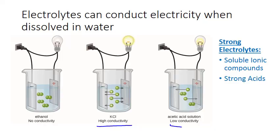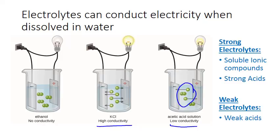The beaker on the right is an example of a weak electrolyte. It's weak because it produces fewer ions in solution. These are generally weak acids. Weak acids do dissociate to a degree, but only a fraction of the amount that a strong acid would, producing hydrogen and an anion. Since there are fewer ions produced in solution, they don't carry current as well.